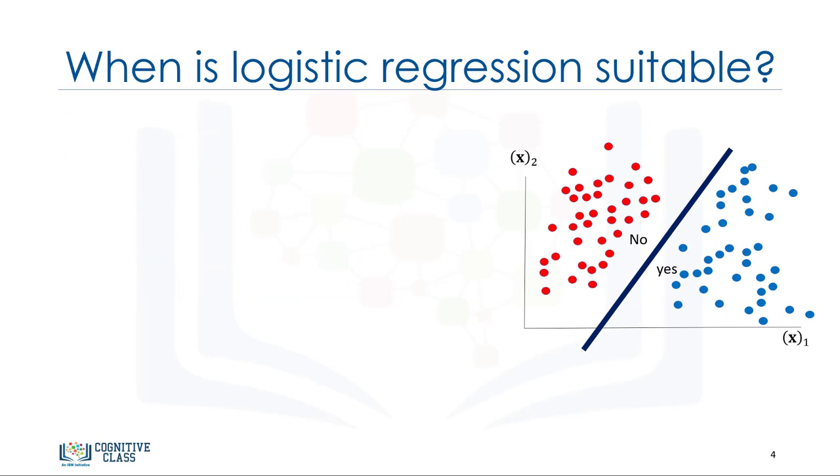There are different machine learning algorithms which can classify or estimate a variable. The question is, when should we use logistic regression? Here are four situations in which logistic regression is a good candidate. First, when the target field in your data is categorical or specifically is binary, such as 0-1, yes-no, churn or no-churn, positive-negative, and so on.